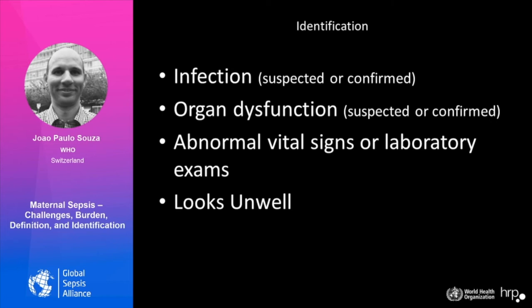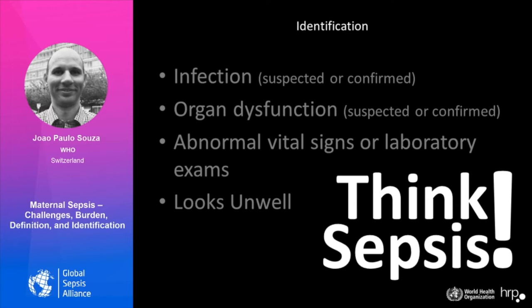In terms of identification, WHO is working on clear and simple practice-oriented identification criteria. Whenever there is a suspected or confirmed infection, we should look for organ dysfunction. Also, whenever we have abnormal vital signs or laboratory exams, or a pregnant woman who looks unwell, we should think of sepsis. Sepsis can be a hidden cause motivating atypical conditions and manifestations of organ dysfunction, even when infection is not clearly presented.